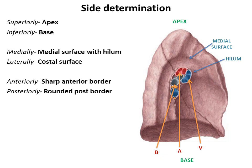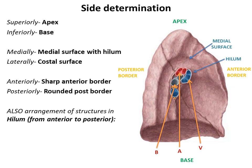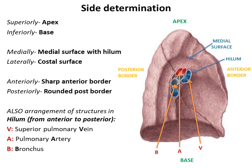We then differentiate the two borders: the sharp anterior border and the rounded ill-defined posterior border. To further confirm the anterior and posterior border, we can identify the structures present in the hilum. The arrangement of structures in the hilum from anterior to posterior is denoted as VAB. Anterior most lies the superior pulmonary vein, identifiable by its thin wall and collapsed lumen. In the middle lies the pulmonary artery, which has a comparatively thicker wall and a round patent lumen. And posterior most lies the bronchus, whose wall is characteristically hard due to the presence of cartilage.